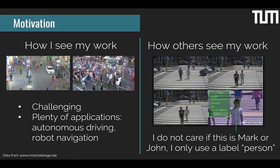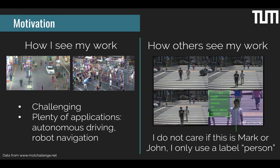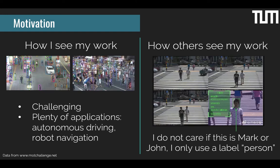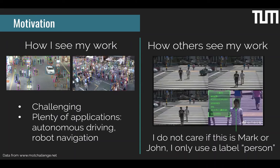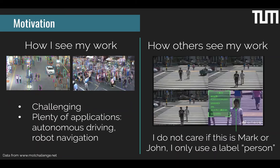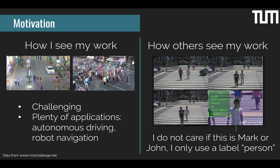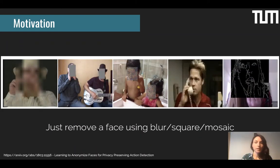It turns out that for my work, for multiple object tracking, for all the algorithms presented during the lecture, we really do not care if this image is depicting Mark or John. We only care that we can label particular pixels with a labeled person or labeled head. So the actual identity is not something that we really use for multiple object tracking or segmentation. This motivates us to look for ways of removing identity from an image so that we can release multiple object tracking benchmarks without invading people's privacy.